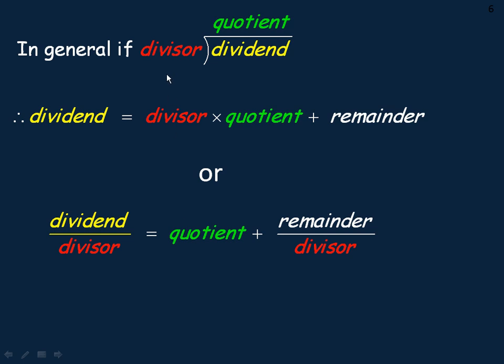A little terminology before we leave the dividing part of this lesson. In any division, what you're dividing by is called the divisor, what you're dividing it into is called the dividend, and your answer is called the quotient.